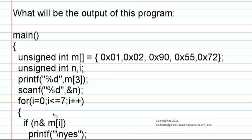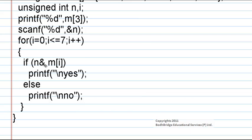Next we are getting the value of n from the user. Within the for loop, an if condition performs the bitwise AND operation. There is no other condition in the if statement — only the operation is performed. This printf statement will be executed depending upon the result returned by the bitwise operation.